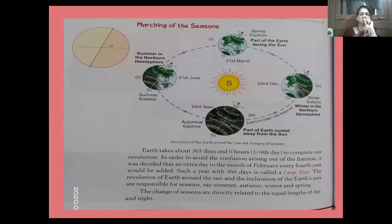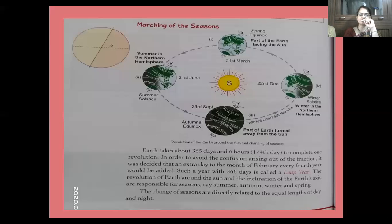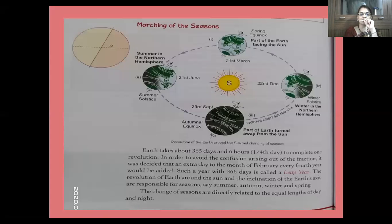Now we move towards the changing of seasons. How are seasons caused? Seasons are caused by the revolution of the Earth. The Earth takes about 365 days and 6 hours to complete one revolution. To avoid the confusion arising from this fraction, it was decided that an extra day would be added to the month of February every 4th year — a leap year.